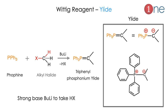How can the ylide be prepared? The ylide is normally prepared from phosphine reacting with an alkyl halide. You then use a strong base to remove HX to form the ylide. The strong base is used because you are removing two atoms from the carbon. So, the ylide forms from phosphine and alkyl halide.